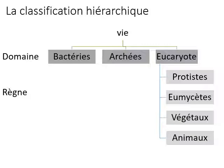Within eukaryotes we have four kingdoms of life, or we can say four large groups of life: protists, eumycetes, plants, and animals.